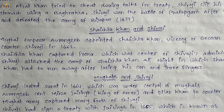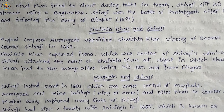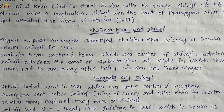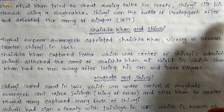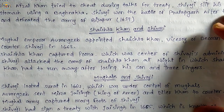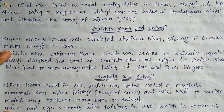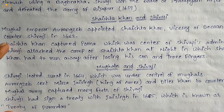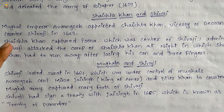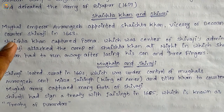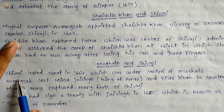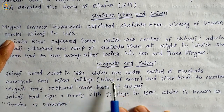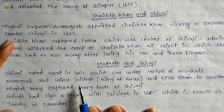Aurangzeb then sent the Amber ruler Mirza Raja Jai Singh to crush the revolt of Shivaji. A treaty was signed between Mirza Raja Jai Singh and Shivaji, known as the Treaty of Purandar. Shivaji had earlier looted Surat in 1664, which was under the control of the Mughals.